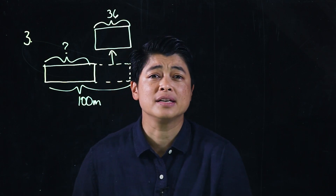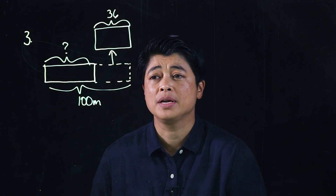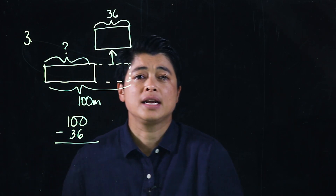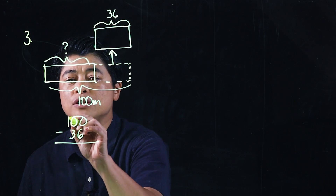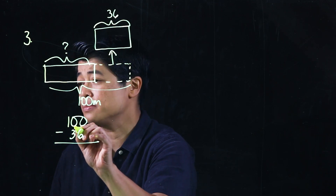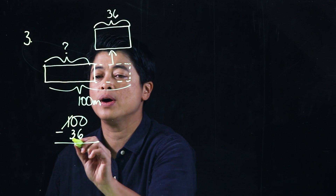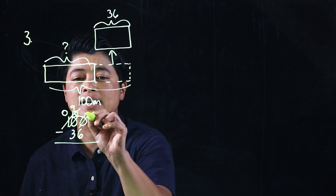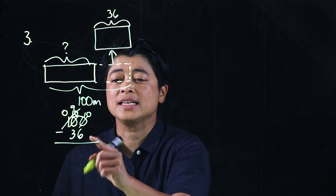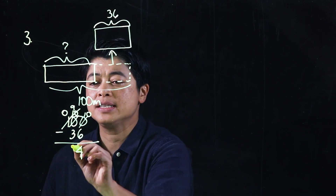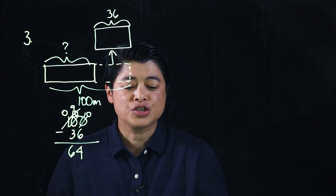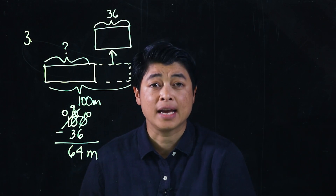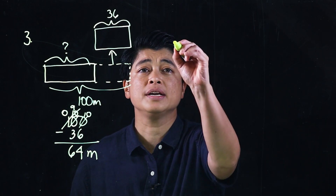Since what's missing is a part, this is a subtraction problem: 100 minus 36. You cannot take away 6 from 0, so we need to borrow — but we can't borrow from 0, so we go all the way to the 1, borrow and regroup, borrow again. That makes this 10, so 10 minus 6 is 4, and this becomes 6. She is 64 meters away from the finish line.